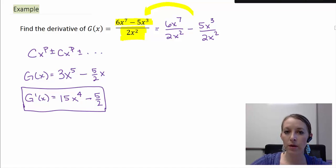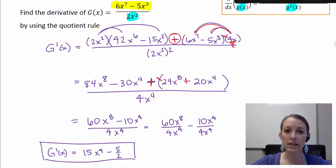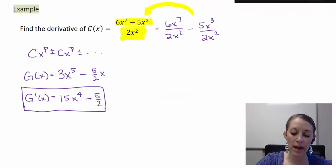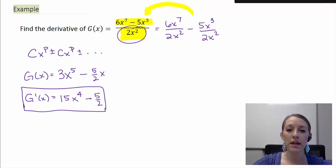The same question you probably had with the product rule applies here: when I simplify first, I have just a few easy steps, but using the quotient rule involves a much more intense process. So why use the quotient rule? Because sometimes we cannot simplify the expression first, or simplifying it actually makes things more complicated. In this example the denominator was a single, simple term. If the denominator becomes more elaborate, simplifying first gets much harder. We'll see examples of that in the next video.